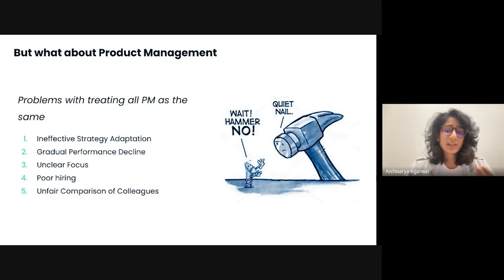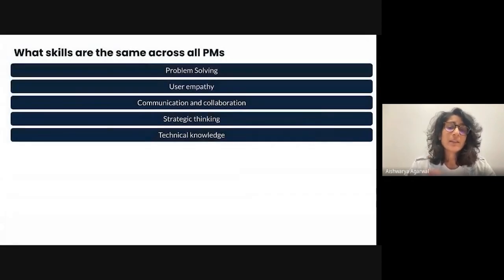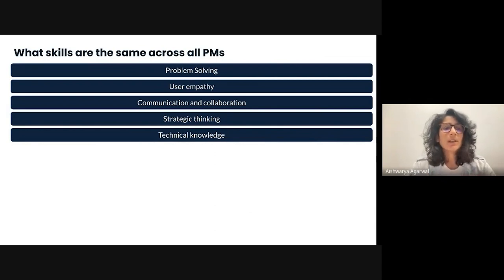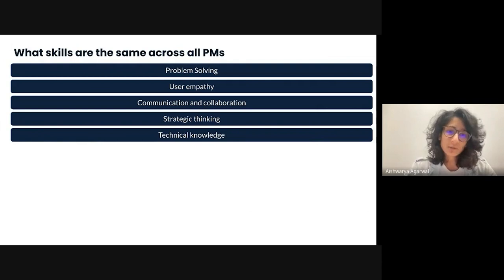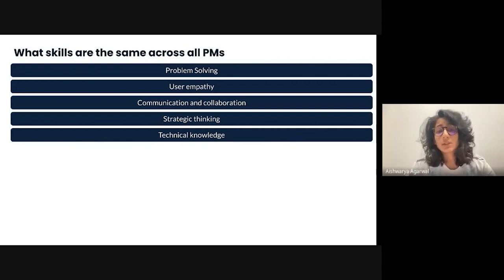So now we know the problems that can arise when you treat all PMs the same. But let's also quickly consider what the similarities are across all PMs. There are five major skills needed across all PMs, and it is important to continuously work on these. The first one is problem solving — you should be able to break down a complex problem into manageable chunks so that you can reason about them and iterate to find an appropriate solution. Second, user empathy. According to me, this is one of the top skills for a PM. You need to be able to understand the user and be the voice of the user in the development of your product, understand their pain points, design to solve those pain points, and consistently be in touch with your user.